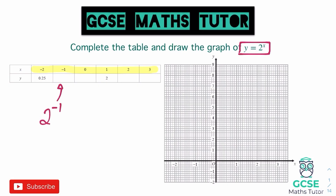For x = negative 1, the power of negative 1 means we flip it over — the reciprocal of 2 is one half, or 0.5. For x = 0, anything to the power of 0 equals 1. For x = 1, we get 2 to the power of 1, which is 2. For x = 2, we get 2 squared which is 4. And for x = 3, we get 2 cubed which is 8. And there we go — we have all our values.